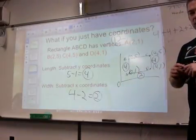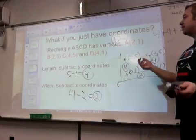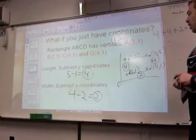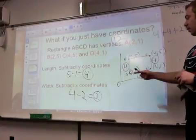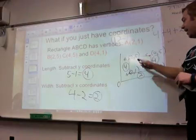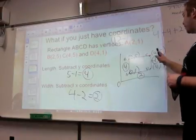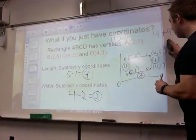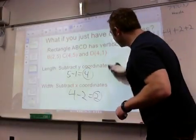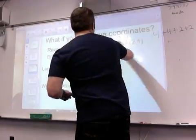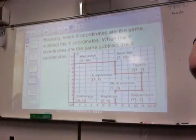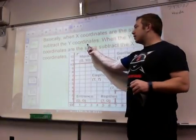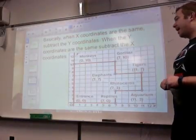So you kind of got to take it slow, and if you can't see it right away, like some people can, like Mrs. Murphy back there, you might want to draw it out and label your coordinates. When the X coordinates are the same, you subtract the Y coordinates. When the Y coordinates are the same, you subtract the X coordinates.